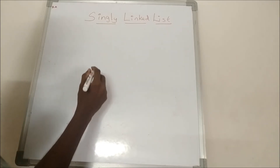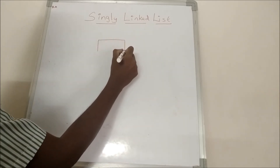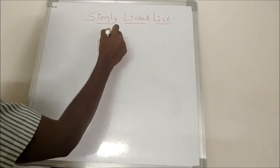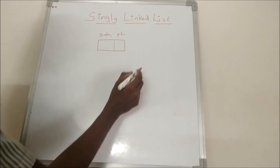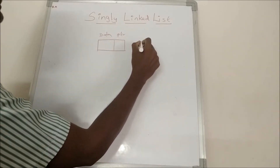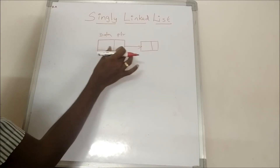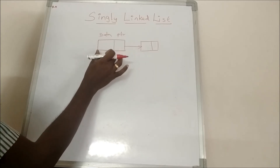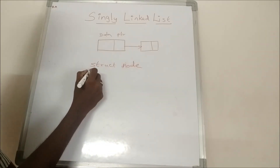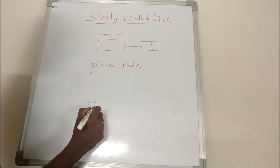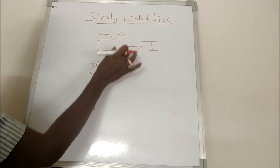The node structure is the very base for any data structure program. A node comprises two portions: one part for data and one part for a pointer, which links to the next similar node. For a collection of dissimilar data items, we use structure syntax: 'struct', then the name of the structure, open curly braces, and close with a semicolon.